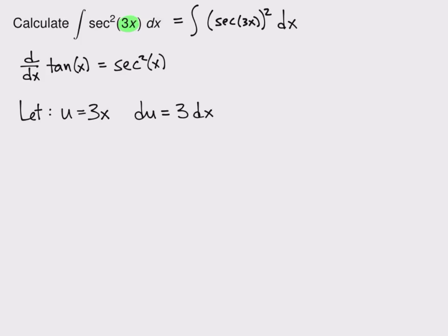Now we don't have a 3dx in the integrand. We only have a dx. So as usual, it's a very common trick. I'm going to divide by 3 and get a dx on its own.